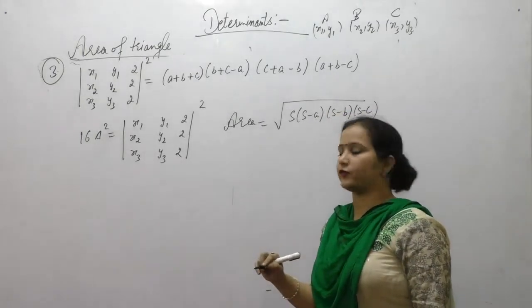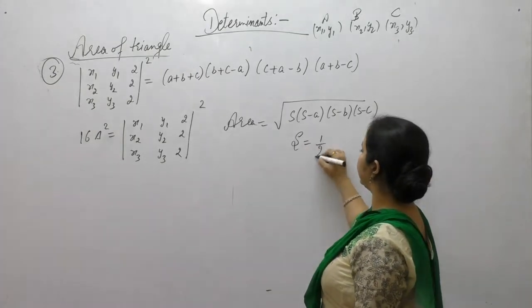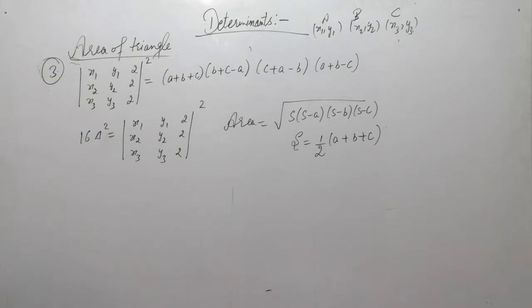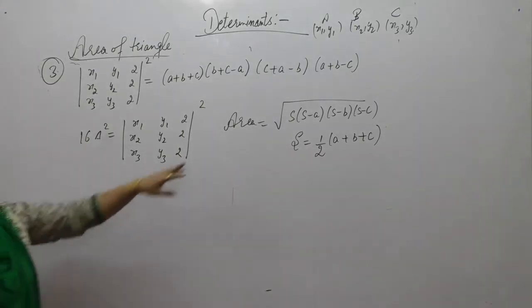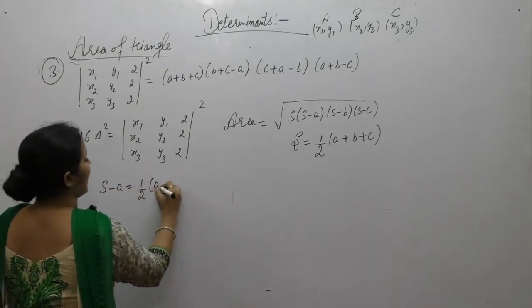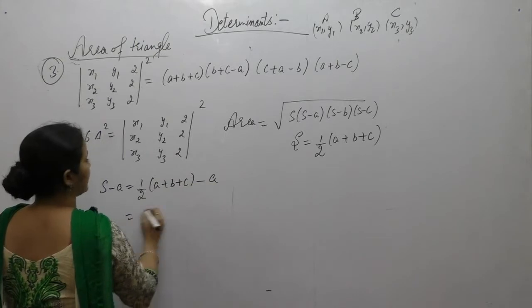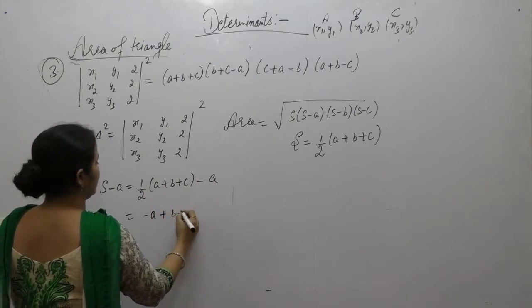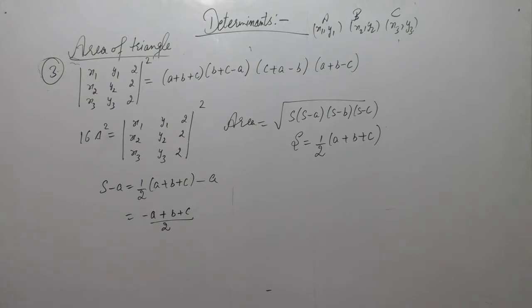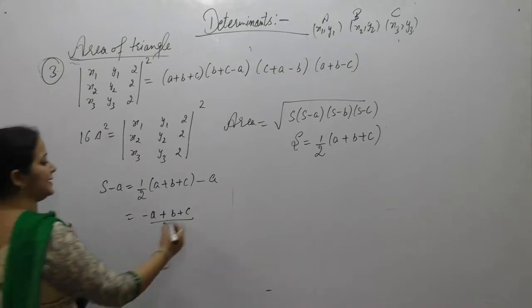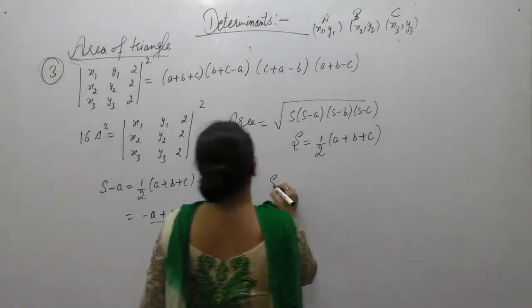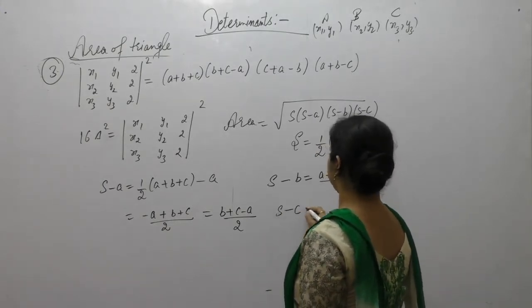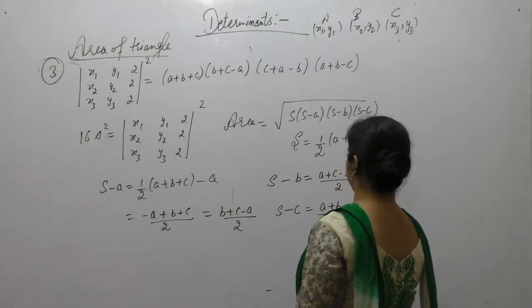Since a, b, c are the sides of the triangle, s = (a+b+c)/2. Now we find s-a = (a+b+c)/2 - a = (b+c-a)/2. Similarly, s-b = (a+c-b)/2 and s-c = (a+b-c)/2.